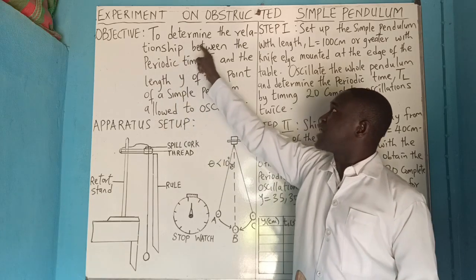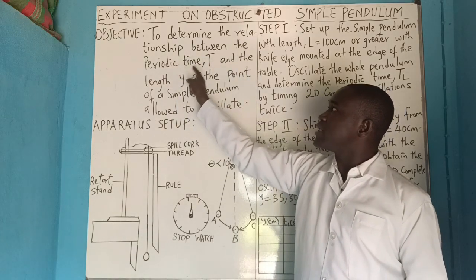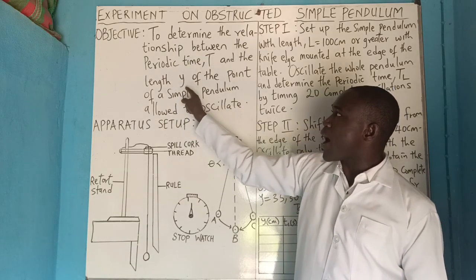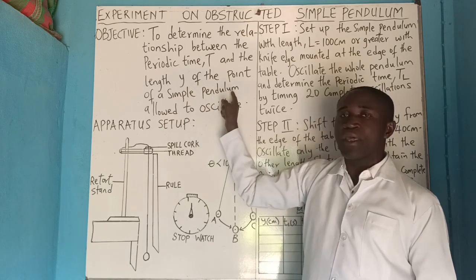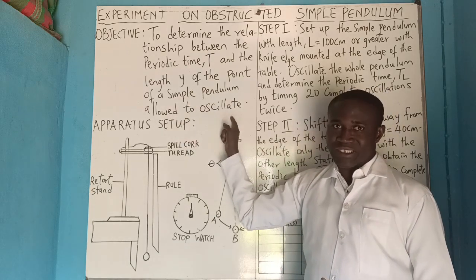Objective: to determine the relationship between the periodic time T and the length y of the point of a simple pendulum allowed to oscillate.